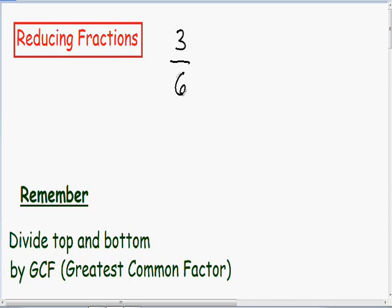Well, you can tell that 6 can be divided by 3 evenly, because 6 divided by 3 is 2. And 3 can also be divided by 3 evenly. 3 divided by 3 is 1. So our greatest common factor between 6 and 3 is 3.